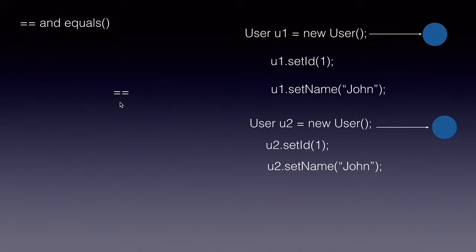Now if we use the double equal to operator to compare these two objects, it will return a boolean false, because the double equals compares the object references or the memory locations and not the contents within the object.